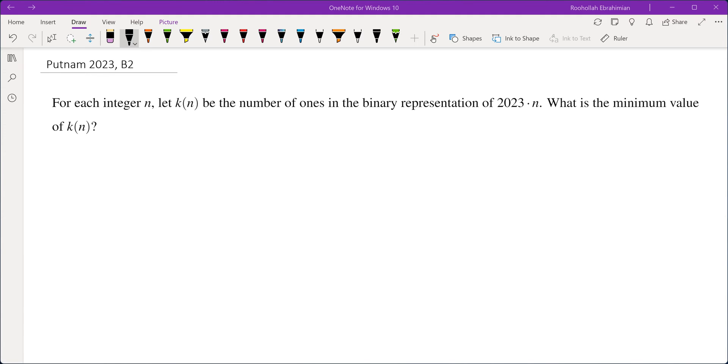Hello, in this video we're going to go over problem B2 from Putnam 2023. For each integer n, let k(n) be the number of ones in the binary representation of 2023 times n. What is the minimum value of k(n)?